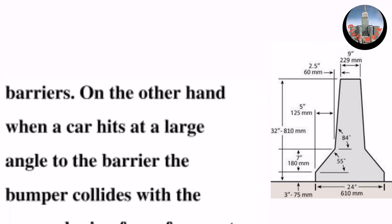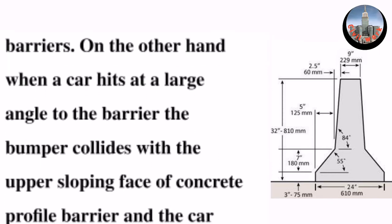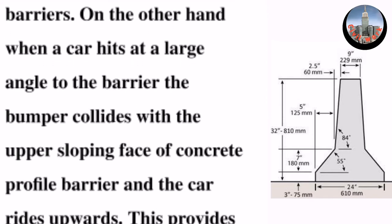On the other hand, when a car hits at a large angle to the barrier, the bumper collides with the upper sloping face of concrete profile barrier, and the car rides upwards.